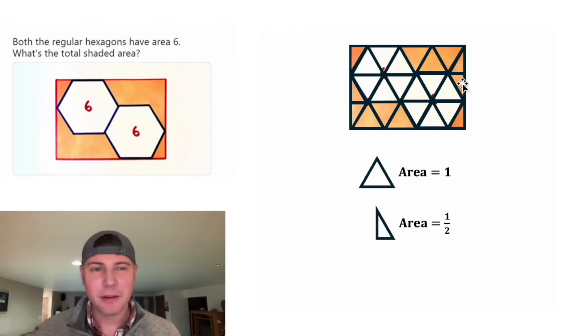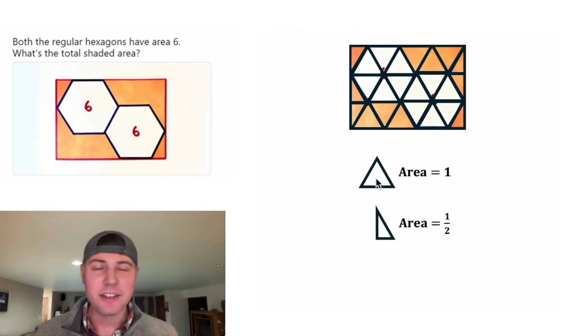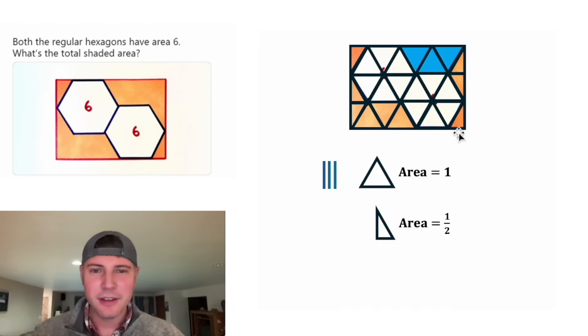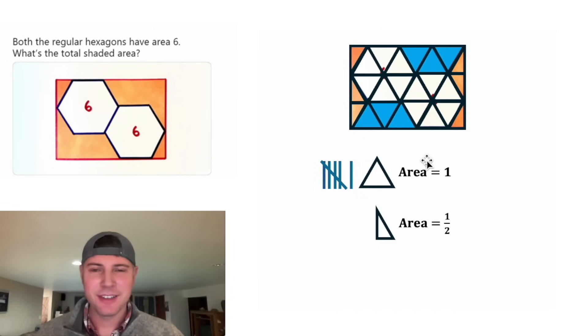So that comprises the entire shaded area. We can just tally these up and add them all together. Let's do the equilateral triangles first. We have 1, 2, 3, 4, 5, 6.